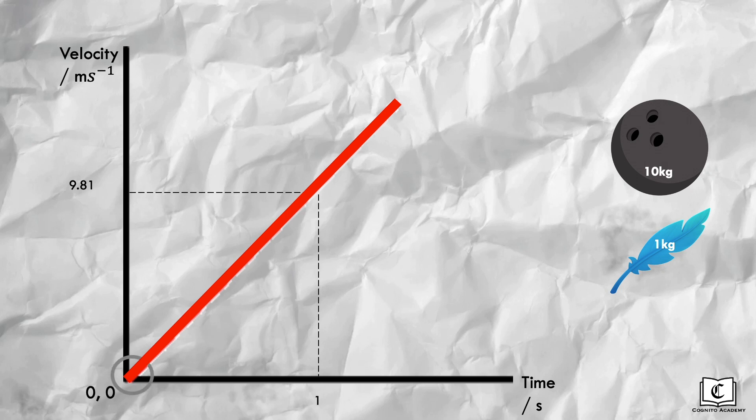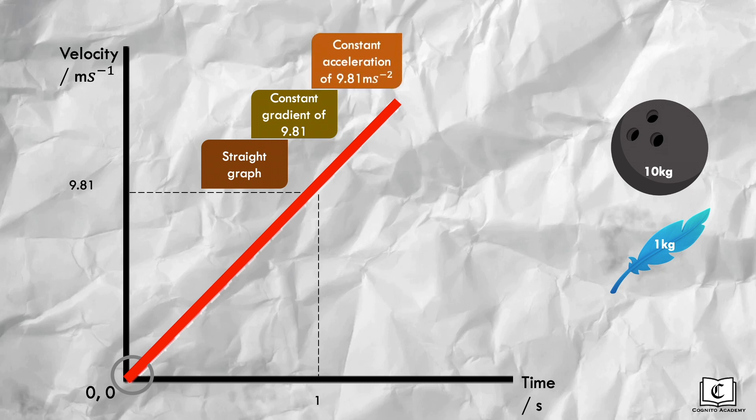Firstly, the graph starts at zero. Since at time zero, both objects are stationary momentarily right before release. As time progresses, we see a straight line graph, indicating a constant gradient of 9.81. Gradient of the velocity time graph is the acceleration. Hence, both objects are undergoing a constant acceleration of 9.81 meters per second squared.